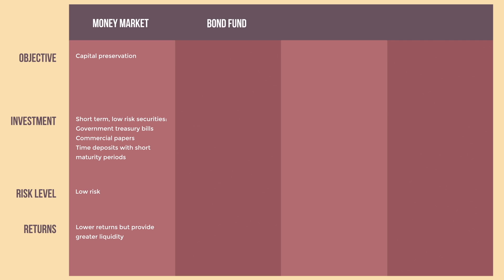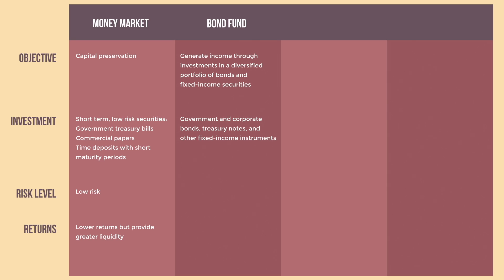Bond Fund UITF — its objective is to generate income through investment in a diversified portfolio of bonds and fixed income securities. These funds invest in government and corporate bonds, treasury notes, and other fixed income instruments, aiming to provide a steady stream of interest income. Bond Fund UITFs carry moderate risk and provide better returns compared to Money Market UITFs, but they are subject to interest rate fluctuations. Returns depend on prevailing interest rates and the credit quality of the bonds in the portfolio, and are typically higher than Money Market UITFs but lower than equity funds.